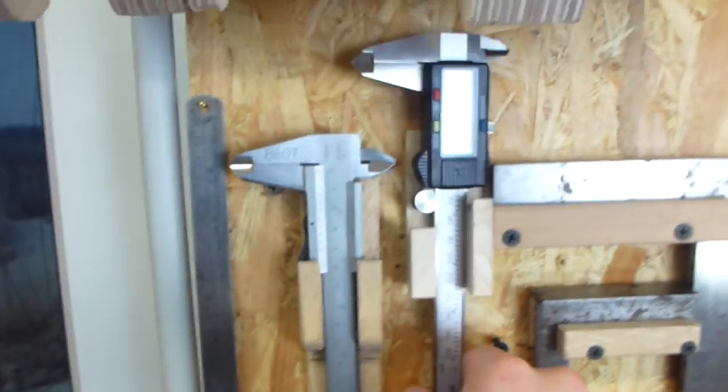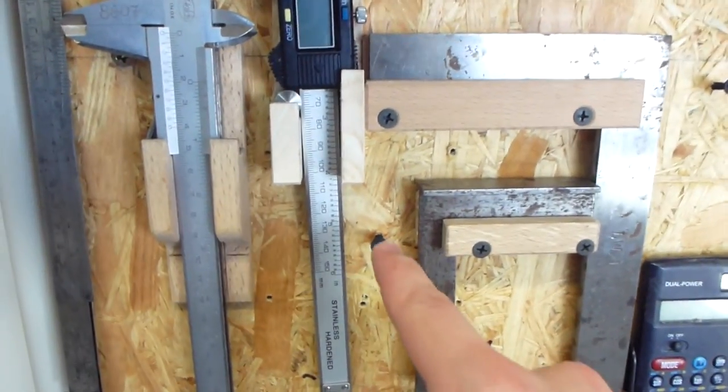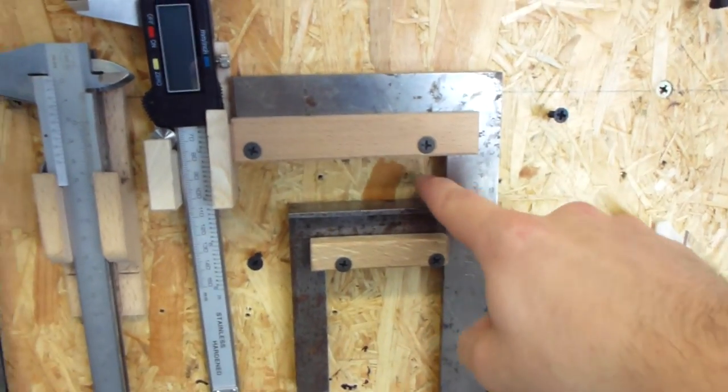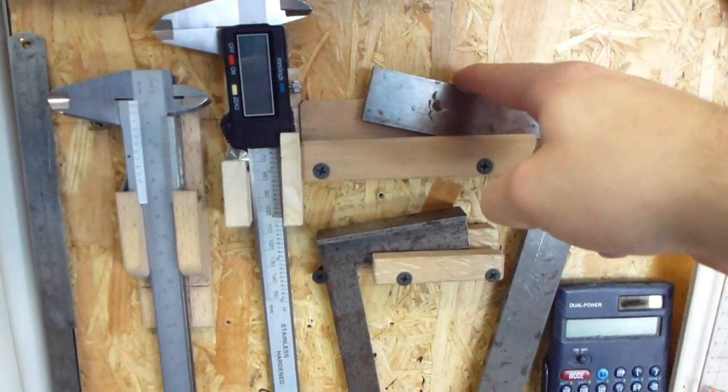Alright, so everything has a place on the wall now. And if you're wondering what these two screws are for, they prevent the squares from accidentally dropping out of their holders.